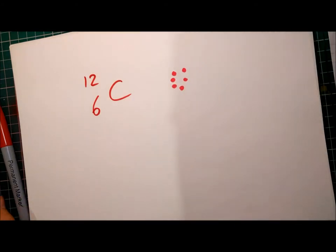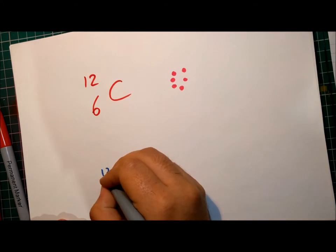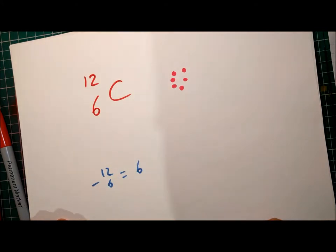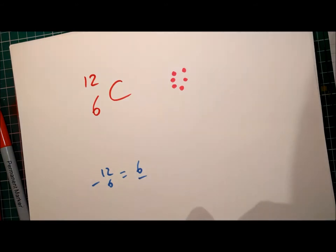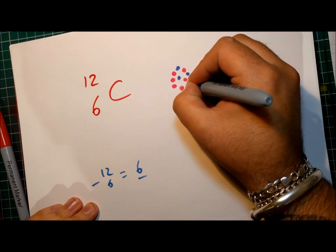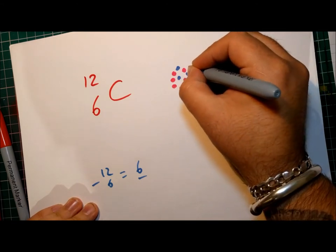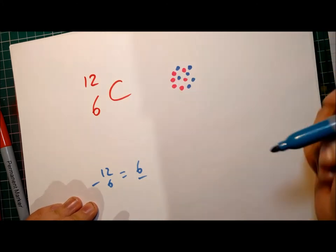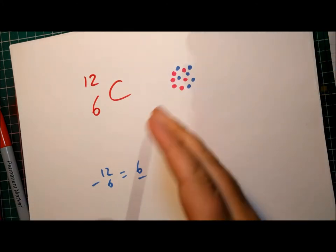Now how many neutrons? Well what's the difference between 6 and 12? 12 minus 6, that's going to equal 6, so there must be 6 neutrons. So let's draw those in. 1, 2, 3, 4, 5, 6. That's 12 total. It has a nucleus with a mass of 12, and 6 of those are protons.